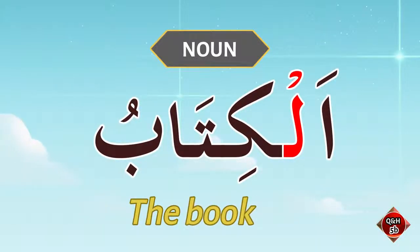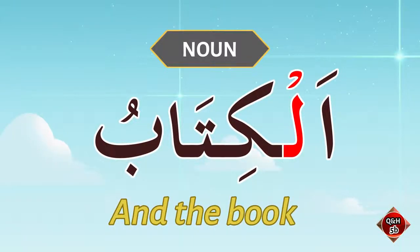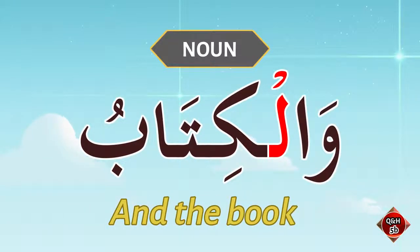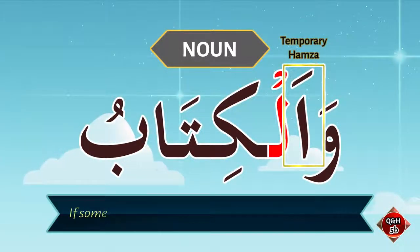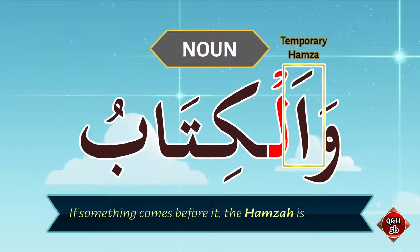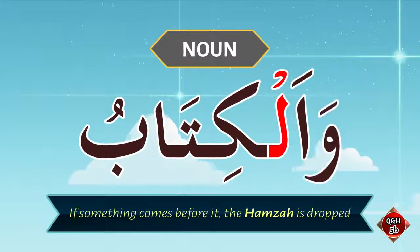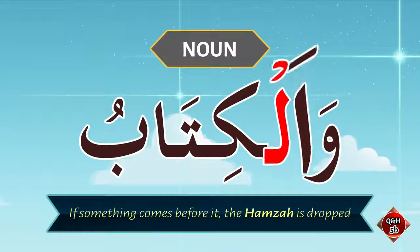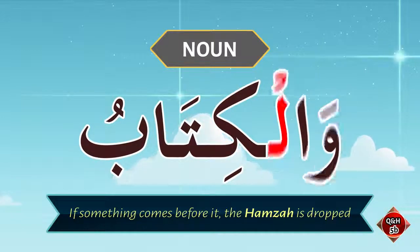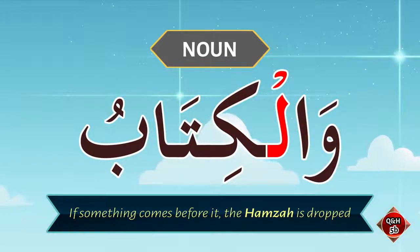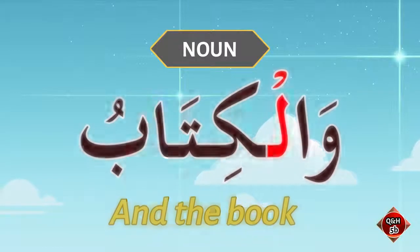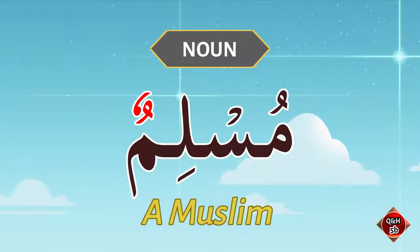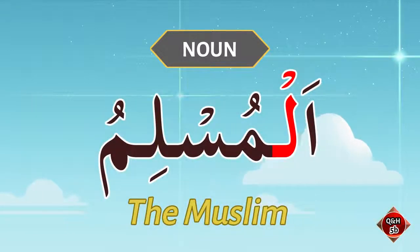It will be 'al kitabu' — the book. And if you want to say 'and the book,' you will say 'wal kitab.' Why? The hamza before 'ul' is temporary, so if something comes before it, the hamza is dropped. That's why when 'wa' comes, we say 'wal' — for example, 'wal kitabu,' meaning 'and the book.' Similarly, if we add 'al' to 'muslimun,' it will be 'al muslimu.' Can you give me the noun with al?